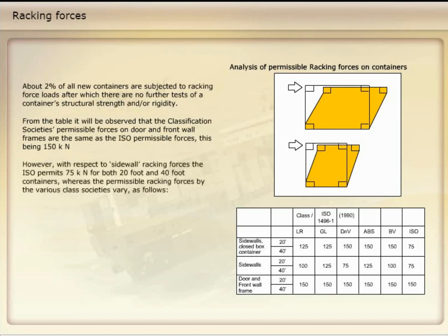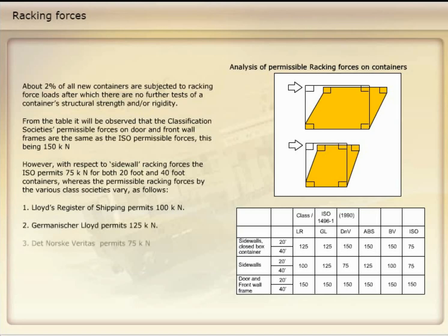However, with respect to sidewall racking forces, the ISO permits 75 kN for both 20-foot and 40-foot containers, whereas the permissible racking forces by the various class societies vary as follows: 1. Lloyd's Register of Shipping permits 100 kN. 2. Germanischer Lloyd permits 125 kN. 3. Det Norske Veritas permits 75 kN. 4. The American Bureau of Shipping permits 125 kN. 5. Bureau Veritas permits 100 kN.